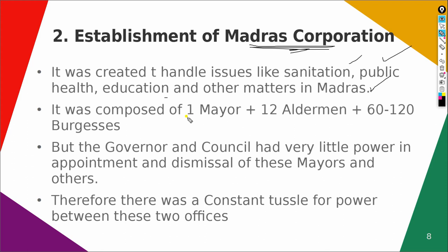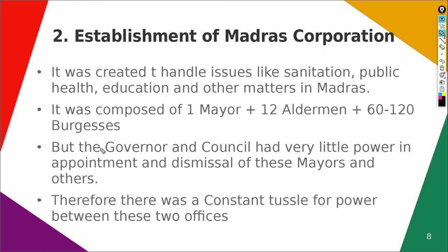The composition of the Madras Corporation was one Mayor, 12 Aldermen, and 120 Burghers. The Mayor was always an Englishman — a native was never appointed as Mayor. However, the Governor and Council had very little power in the appointment and dismissal of the Mayor and others. The Mayor and the council were not directly appointed by the Governor and Council, so there was no direct interference.